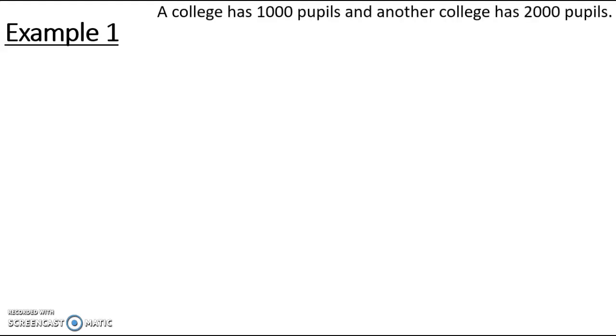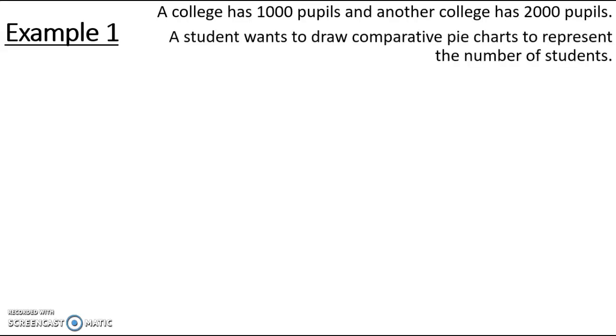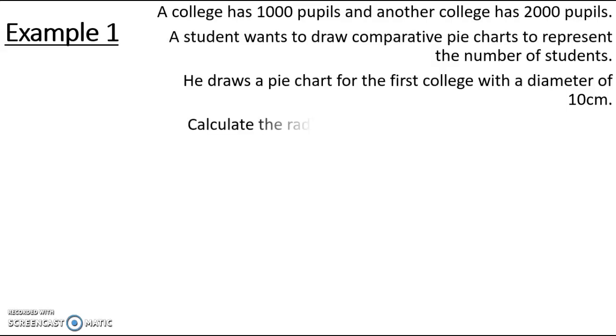The first example is about two colleges. One college has 1,000 pupils and the other college has 2,000 pupils. The student wants to draw a comparative pie chart to represent the number of students. And he draws a pie chart for the first college with a diameter of 10 centimeters. Calculate the radius for the second pie chart.